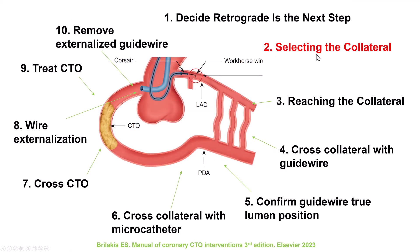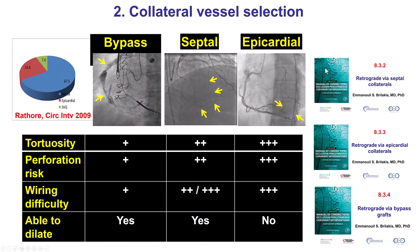The second step is to select the collateral — or we should say the retrograde pathway — because it's not always a collateral; it can also be a bypass graft. We have three options for going retrograde: one is to use bypass grafts, both venous and arterial, both open and occluded; the second is to use septal collaterals; and the third is to use epicardial collaterals.